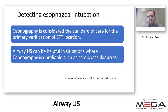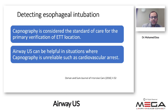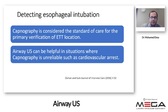Another use of airway ultrasound is detecting inadvertent esophageal intubation. Capnography is considered the standard of care for confirming endotracheal tube placement; however, airway ultrasound can be very helpful in situations where capnography is unreliable, such as during cardiac arrest. A meta-analysis by Tay et al. suggested that in situations where capnography may be unreliable, ultrasound can be helpful with high diagnostic value and optimal sensitivity and specificity for identifying esophageal intubation.